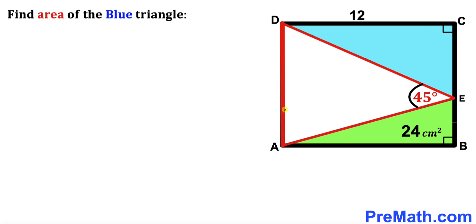Welcome to PreMath. In this video, we have got rectangle ABCD. As you can see in this diagram, it consists of three triangles. The first one is our green triangle ABE. The other one is a white triangle AED. And finally, we have this blue right triangle CDE.